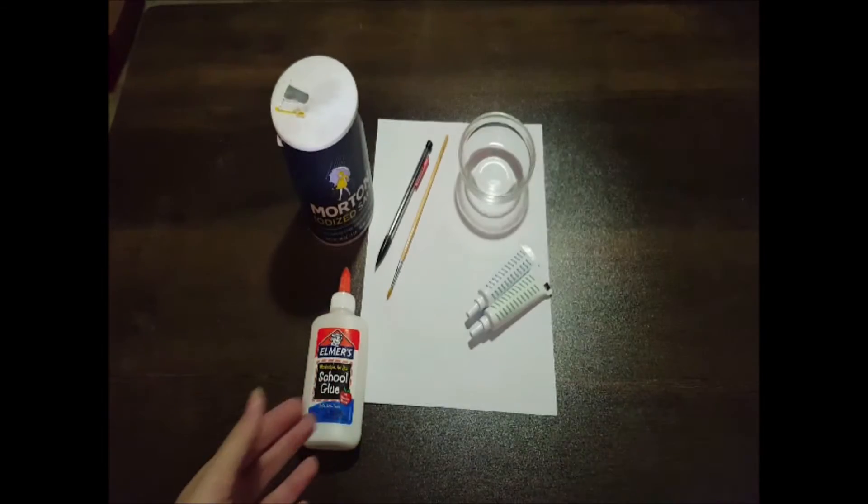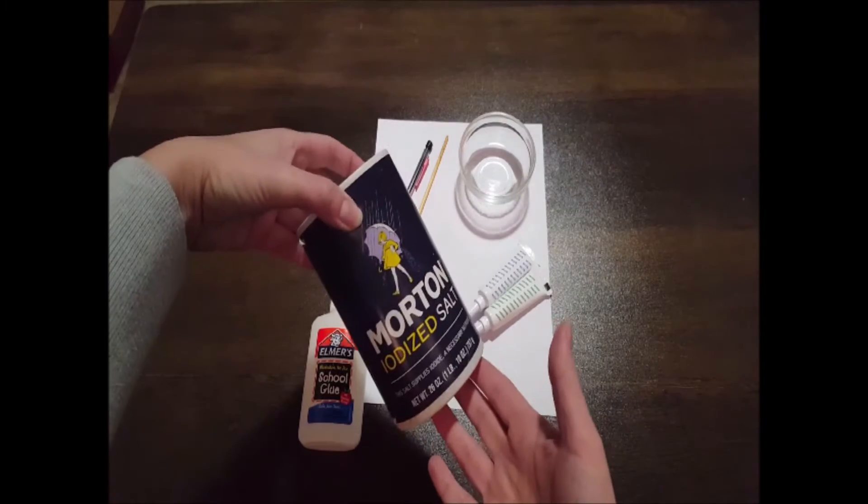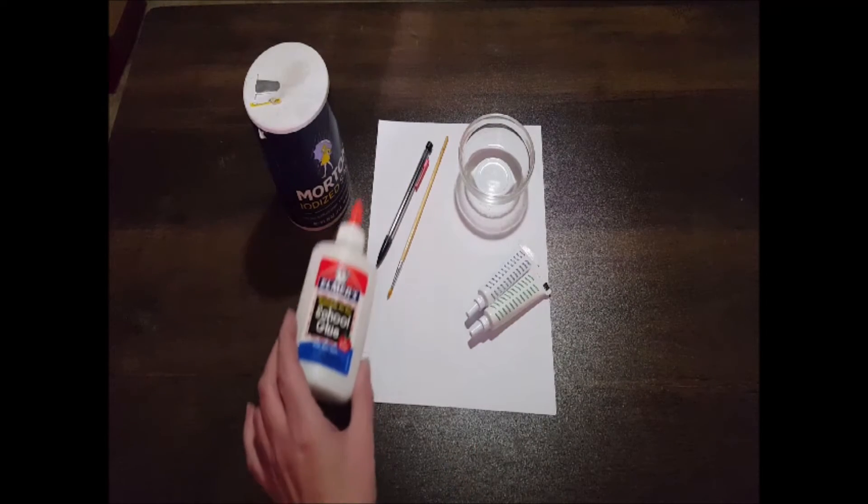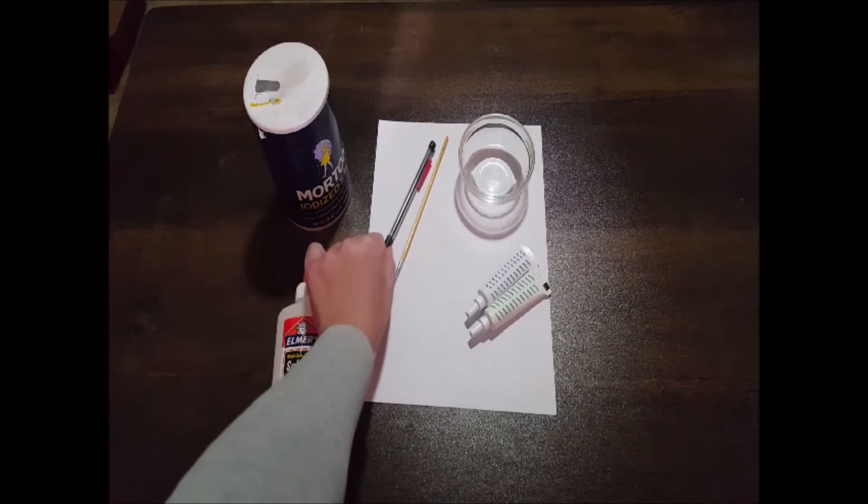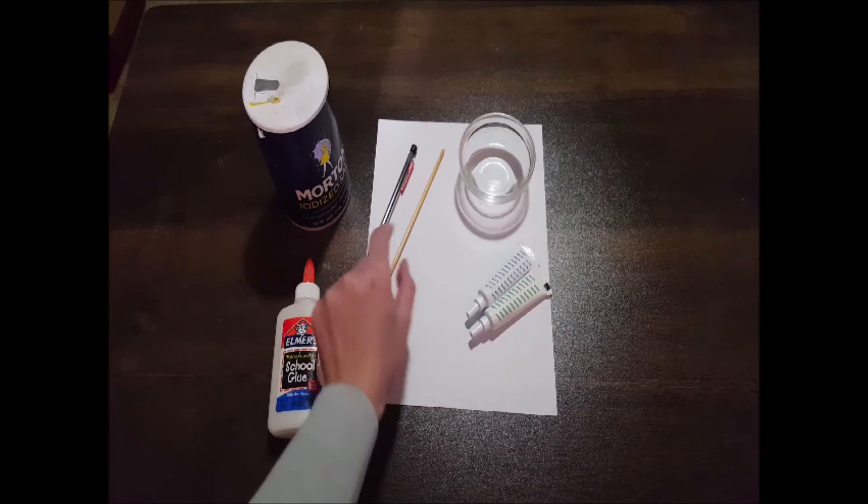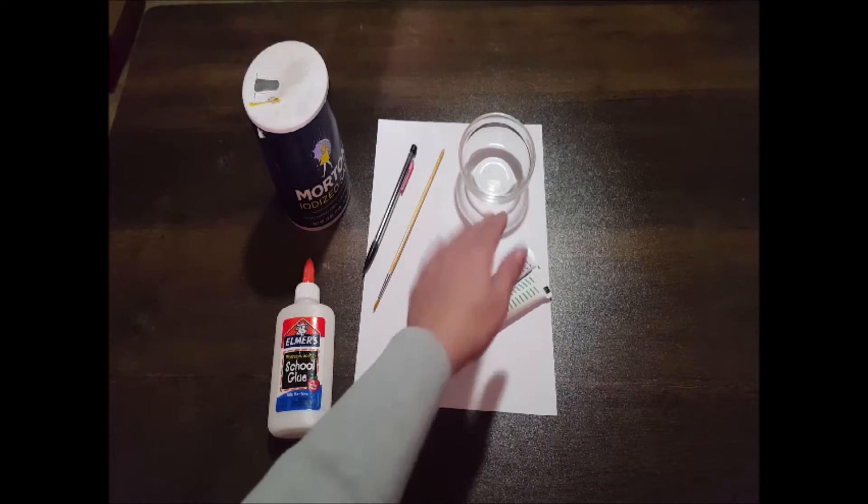For today's craft we're going to need a few things. We're going to need a sheet of paper, but we're also going to want salt. We're going to need a lot of salt, so I have a bunch on hand. We need some regular school glue, a pencil or pen, and a paintbrush. And we're going to make some colored dye using food coloring and water.